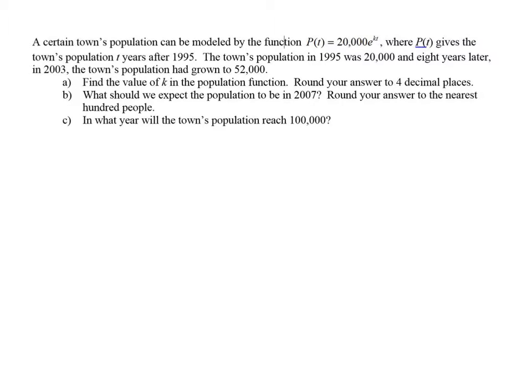A certain town's population can be modeled by the function where P(t) gives the town's population t years after 1995. The town's population in 1995 was 20,000, and 8 years later, in 2003, the town's population had grown to 52,000.